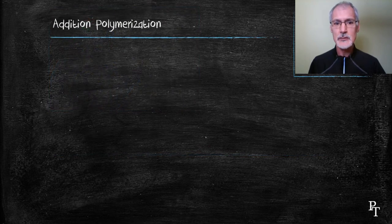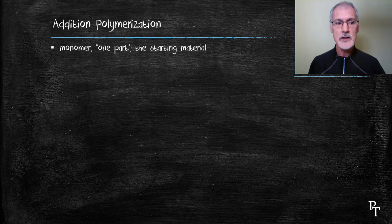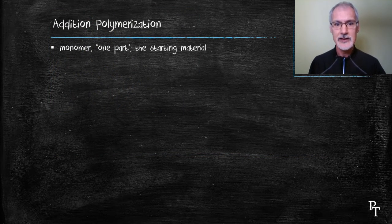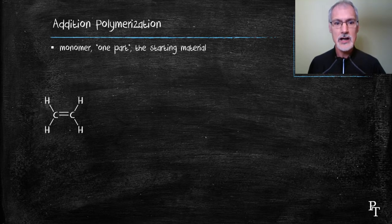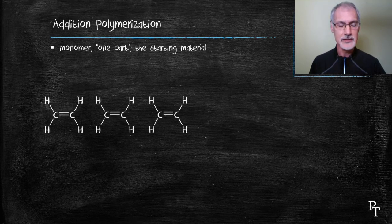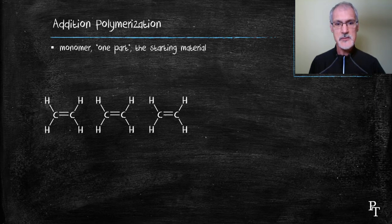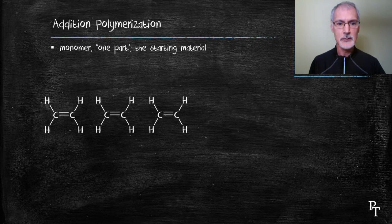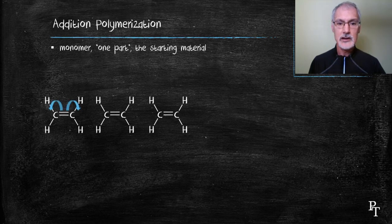We begin a polymer with a monomer, one part, a starting material. In my case, I'm going to start with three molecules of ethene, a two-carbon molecule. The process begins with an initiator, and an initiator breaks apart the double bond, producing a radical.